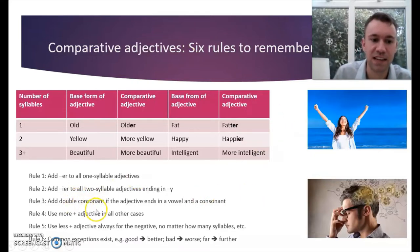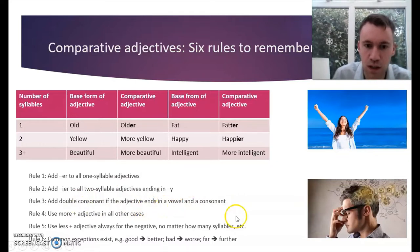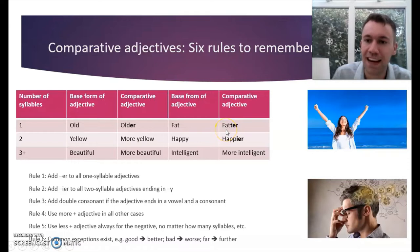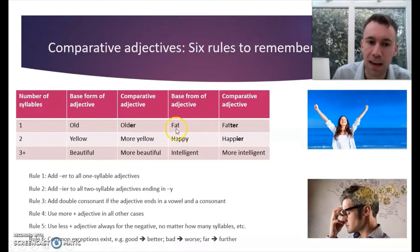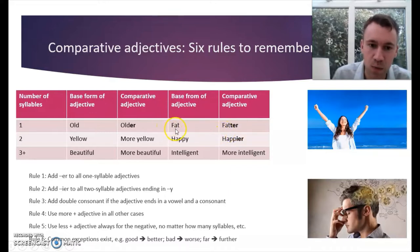Rule three: add a double consonant if the adjective ends in a vowel and a consonant. The adjective 'fat' ends in a consonant and a vowel, therefore when we make the comparative form we add a double consonant — TT — and then ER, because it ends the word in a vowel and a consonant.